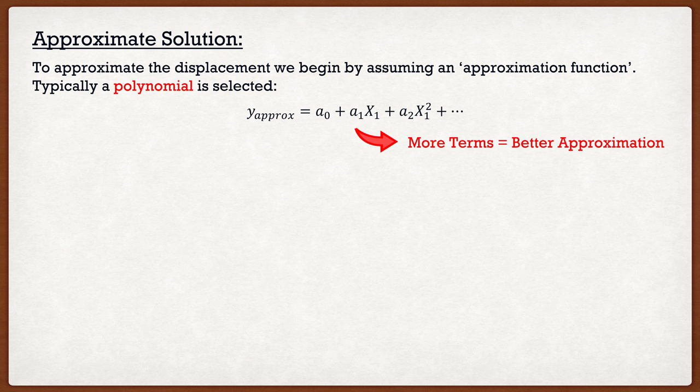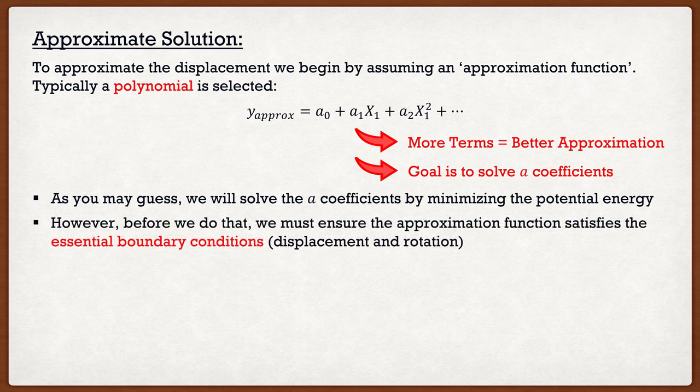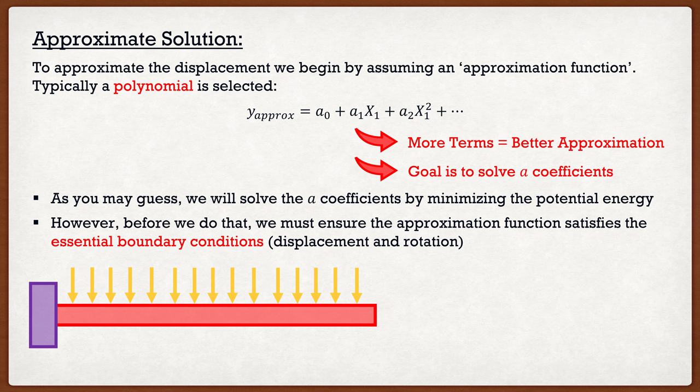We're going to solve for these a coefficients by minimizing the potential energy. However, there's one requirement we must fulfill before minimizing the potential energy: ensuring that our selected approximation function satisfies the essential boundary conditions. These are boundary conditions relating to displacement or rotation. For instance, if I had a cantilever beam with a fixed end at the left-hand side, the deflection there must be zero, so our approximation function at x₁ = 0 must equal zero — meaning a₀ must be zero. Similarly, if I have a fixed end, the rotation at that point must also be zero, so the derivative of our approximation function at x₁ = 0 must equal zero, giving us a₁ = 0.